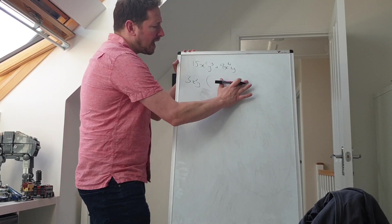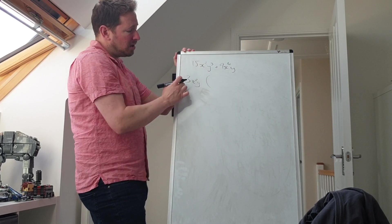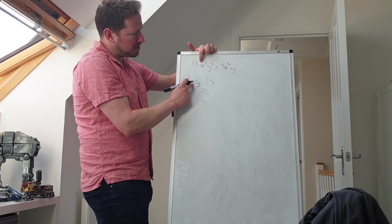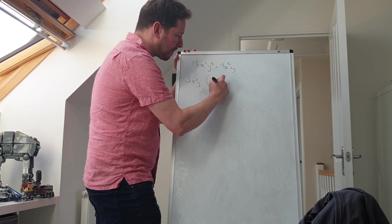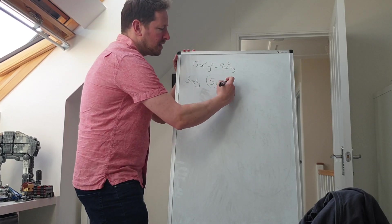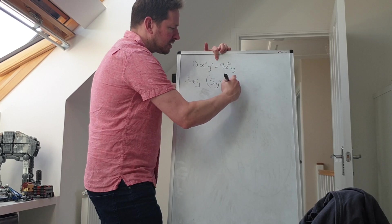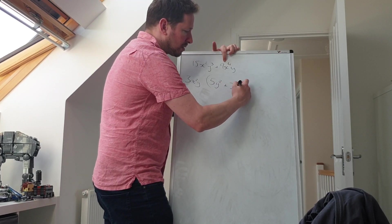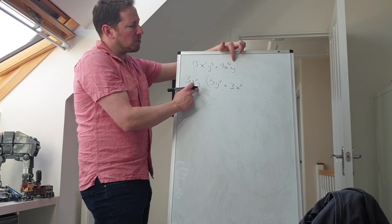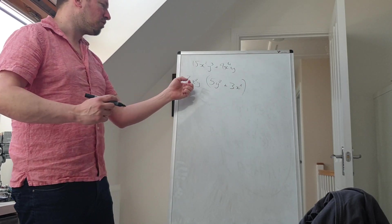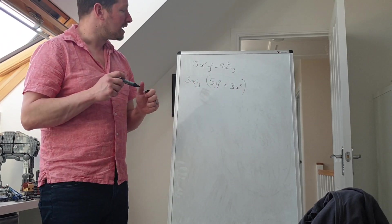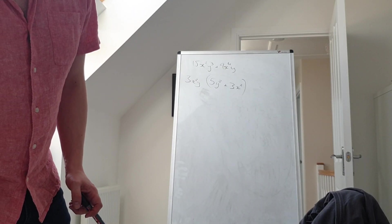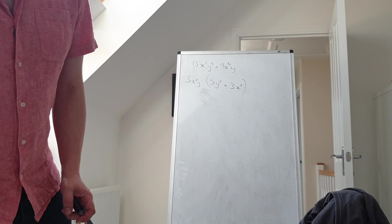So our highest common factor is 3x²y. Now, what do we multiply 3x²y by to get each term? For the first term: multiply by 5 to get 15, we already have x squared, and we need two more y's, so that's 5y². For the second term: multiply by 3 to get 9, and we need x squared, and the y is already there. So the answer is 3x²y(5y² + 3x²).